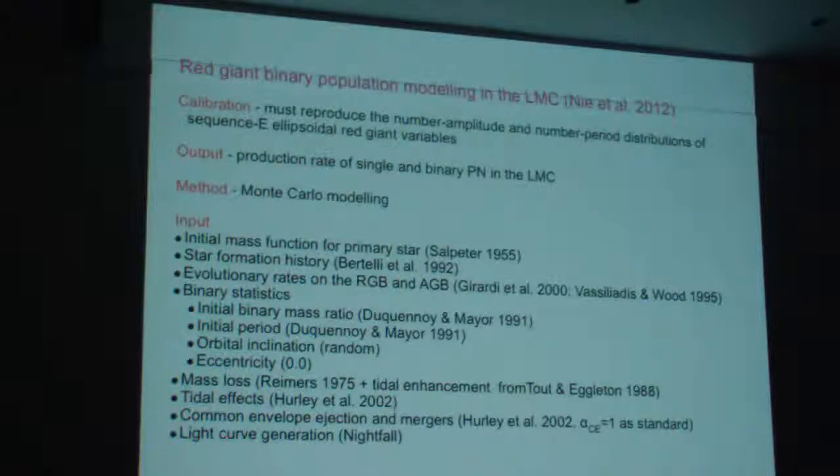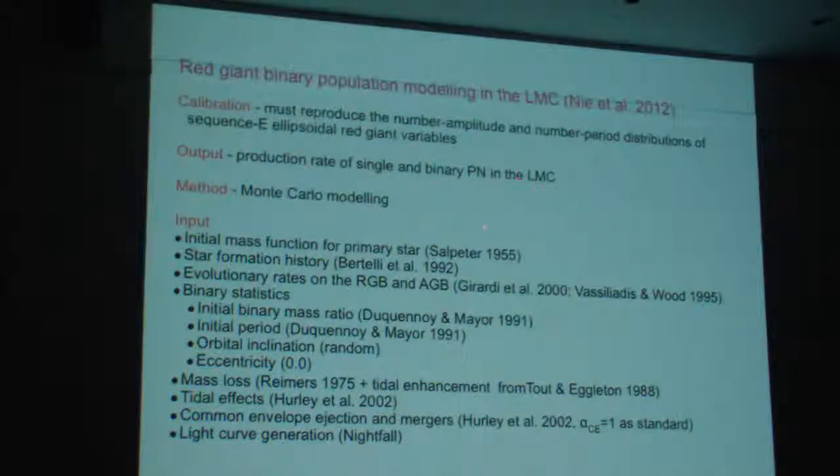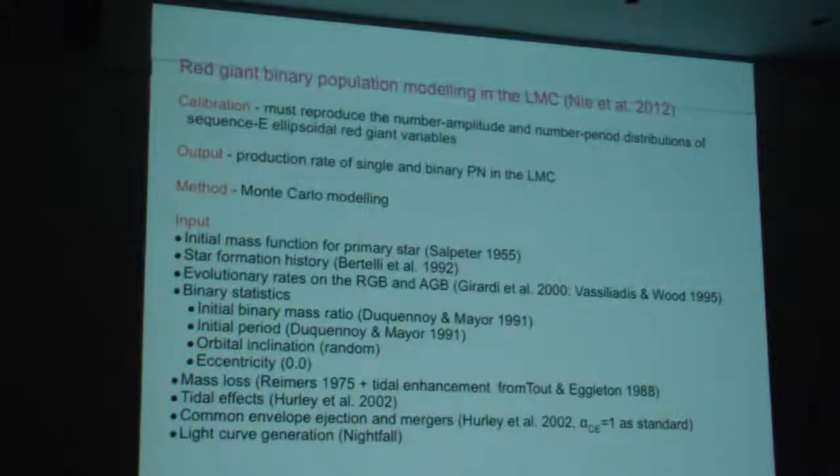So the kind of modeling that we've done here, we calibrate our model by reproducing the number amplitude and the number period distribution of the sequence E red giant variables. And the output of one of the things that's of importance here is the fraction of binaries or the rate of production of single and binary planetary nebulae in the LMC. There are lots of other outputs as well. We do this by taking a million stars with appropriate parameters, binary systems and single systems, and do a Monte Carlo model.